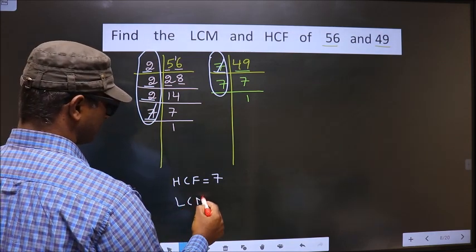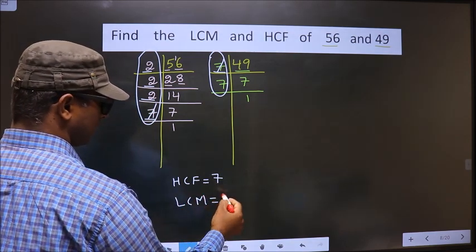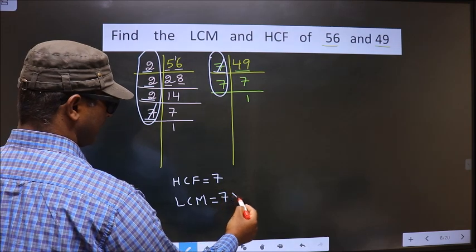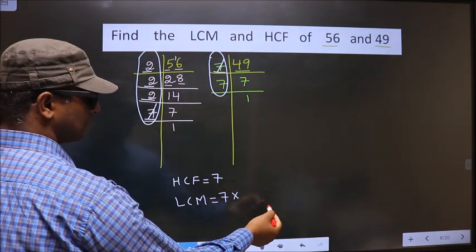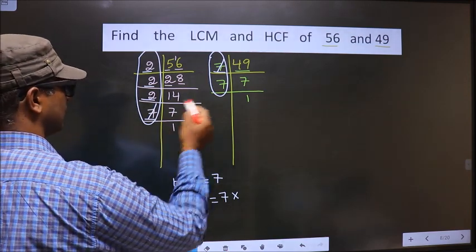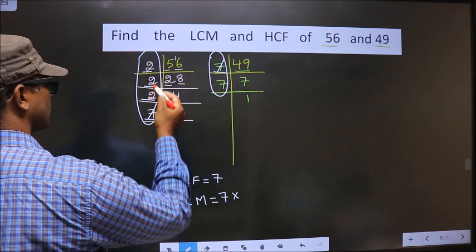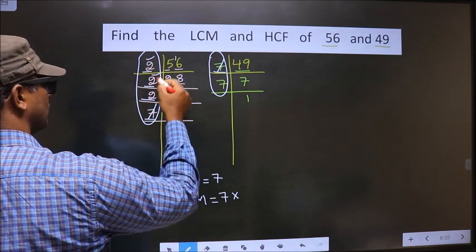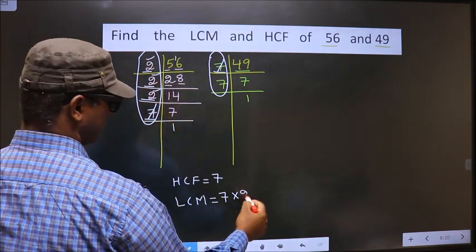Now, LCM. Whatever HCF you got, that times—we should multiply the numbers that were left out or uncut in both these places. So, here left out numbers are 2, 2, 2, three times.